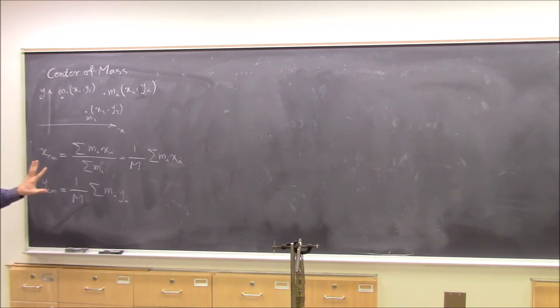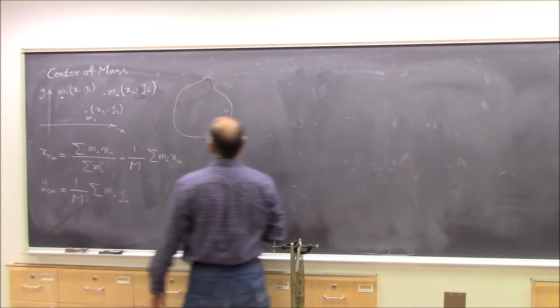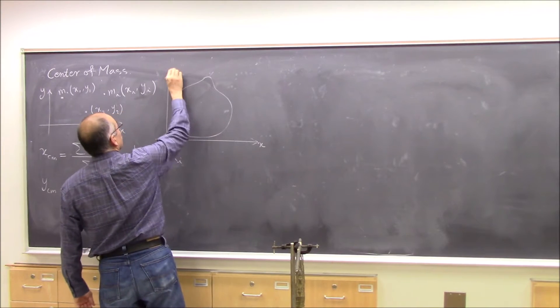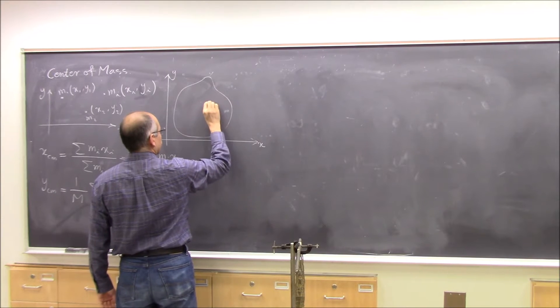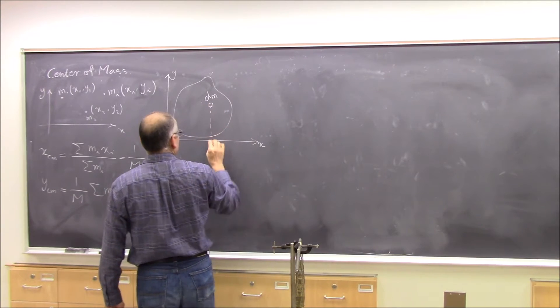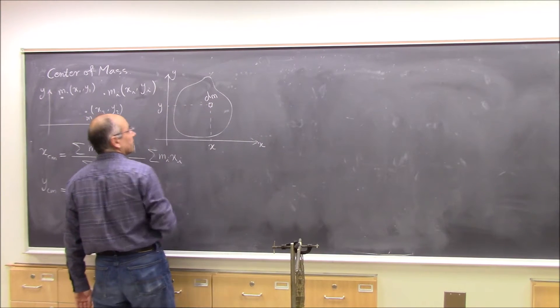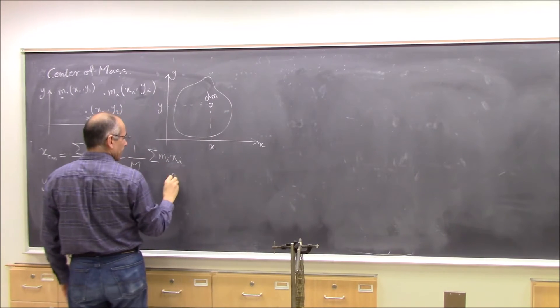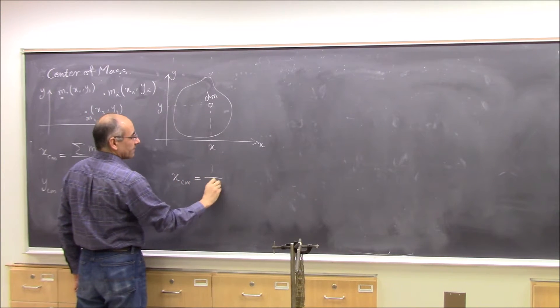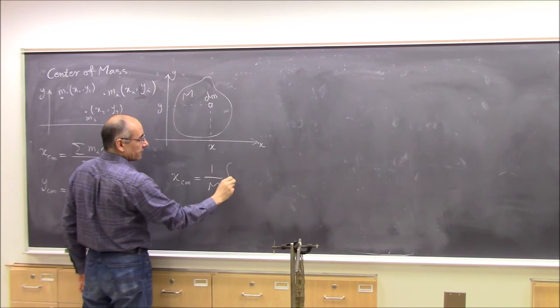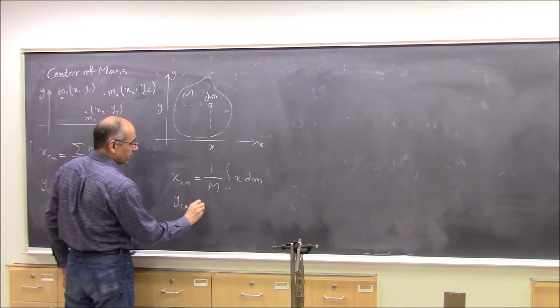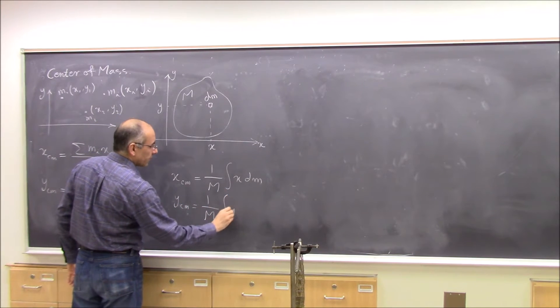And this is for collection of particles. Suppose if you have something that has mass distribution, you put that in a coordinate system, and then you take a small piece of that with mass dm and it has x coordinate and y coordinate. Then you say x of center of mass for this object is 1 over total mass M, integral of x dm. And y of center of mass is the same way: 1 over M integral of y dm.